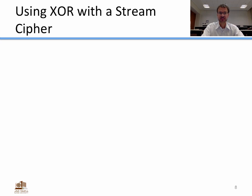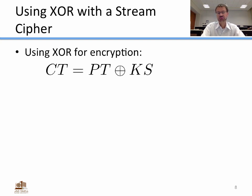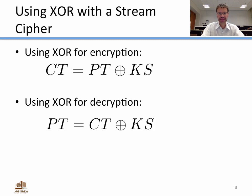Let's look more closely at how we use exclusive OR with a stream cipher. For encryption: cipher text equals plain text exclusive OR'd with the key stream. For decryption: plain text equals cipher text exclusive OR'd with the key stream. Whether encrypting or decrypting, you simply take the message you're working with and exclusive OR it with the key stream.